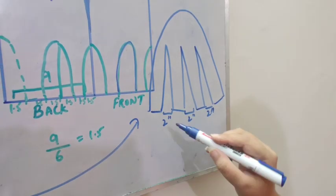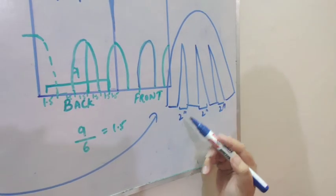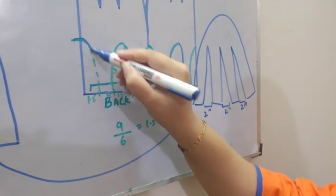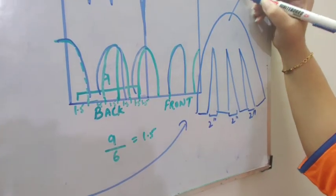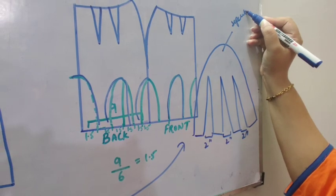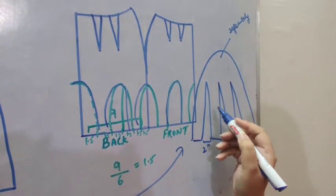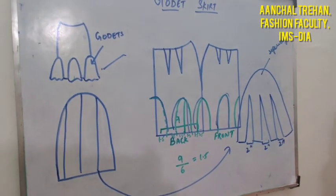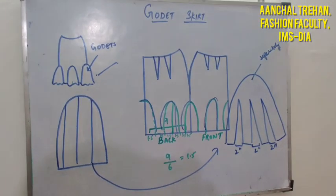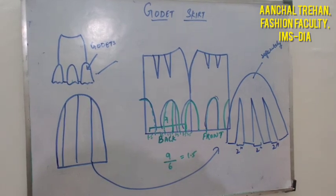And then when we want to stitch this, we will be cutting this part hollow and these Godet separately. And then we will stitch it together to form a Godet skirt. Thank you and have a nice day.